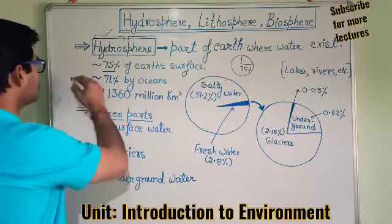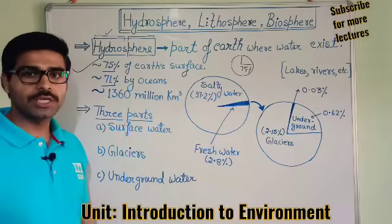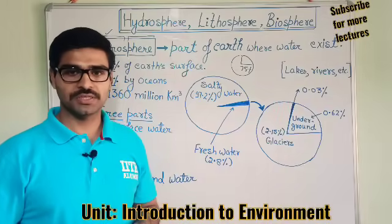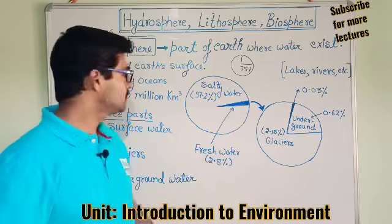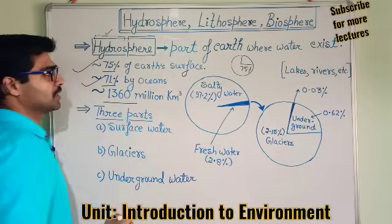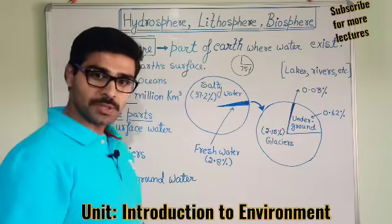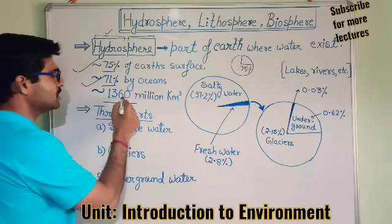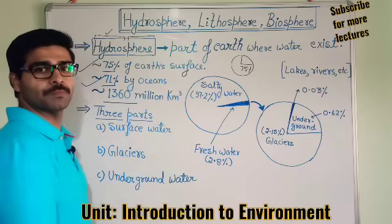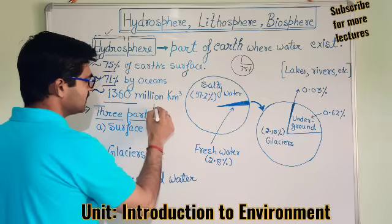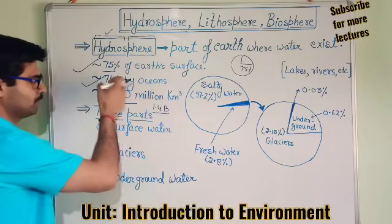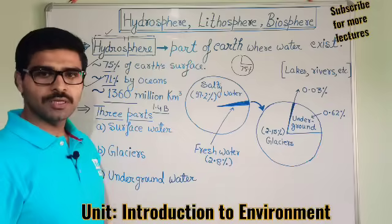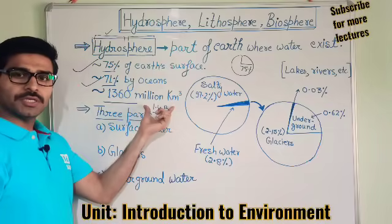Of that 75%, 71% is covered by the oceans and the rest 4% is covered by rivers, glaciers, lakes, ponds, and other water bodies. The total water quantity present on Earth in the hydrosphere is approximately 1,360 million cubic kilometers, or we can simply say 1.4 billion cubic kilometers. This is the total quantity of water present on Earth.